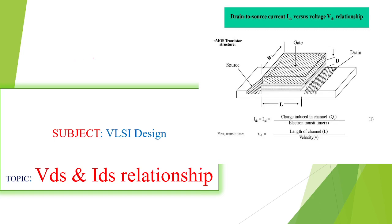I am going to explain the relation between VDS and IDS — the voltage between drain and source and the current between drain and source. In a MOSFET, the current IDS can be defined as the induced charge at the channel Qc divided by the electron transit time, that is tau.